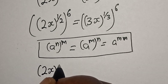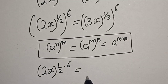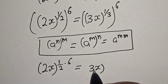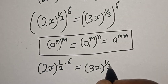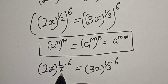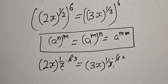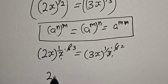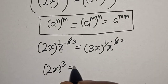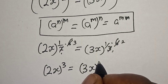Applying this rule: the power becomes 1 over 2 multiplied by 6, which equals 3, and 1 over 3 multiplied by 6, which equals 2. So we have 2x raised to power 3 is equal to 3x raised to power 2.